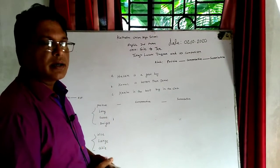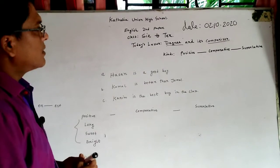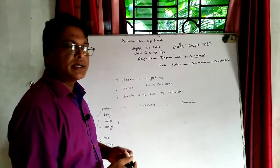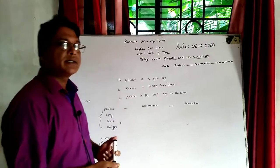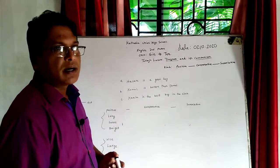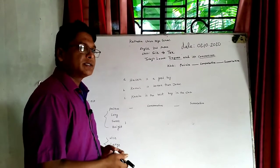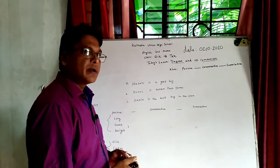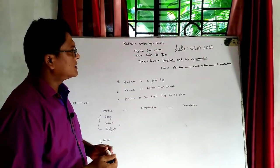Today's topic is about adjective and its comparison. Dear students, if you want to know how to do comparison, you have to know the origin of degree. The origin of degree is adjective. In your previous classes, you have already learned about adjective. So I am again explaining the definition of adjective. Adjectives are those words which are placed before a noun or pronoun and express quality, quantity, or number of a noun or pronoun.